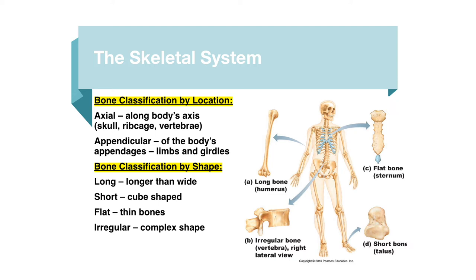Now we'll classify bones by location and shape. In terms of location, we have the axial skeleton and the appendicular skeleton. Axial refers to the axis — think vertical — and includes the skull, rib cage, and vertebral column. Appendicular refers to the body's appendages, or limbs — think horizontal — including the arms (humerus, ulna, radius) and legs and pelvis. Bone shapes include long, short (cube-shaped, like the talus in the ankle), flat (like the sternum), and irregular bones (like vertebrae).